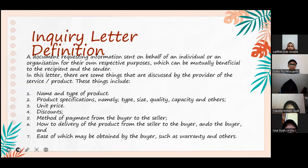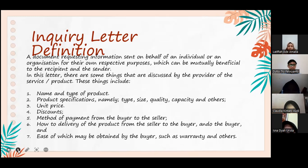These things include: number one, name and type of product; two, product specification, namely type, size, quality, capacity, and others; three, unit price; four, discount; five, method of payment from the buyer to the seller; six, how to deliver the product from the seller to the buyer; and seven, benefits which might be obtained by the buyer such as warranty and others.